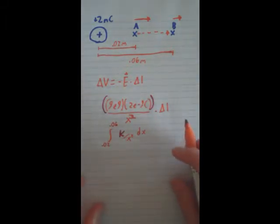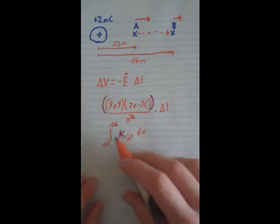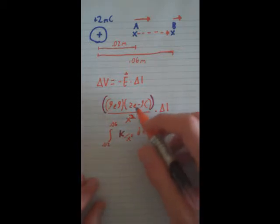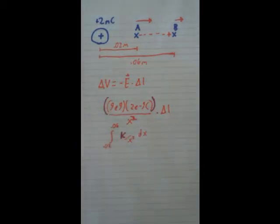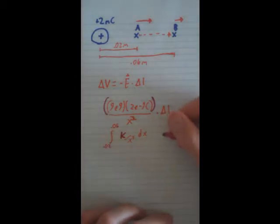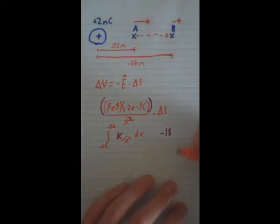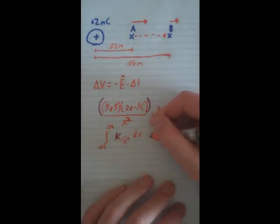And now all we have to do is integrate it. We can take this k out. And actually, when you multiply these two, you just get negative 18. So, that's what k equals.